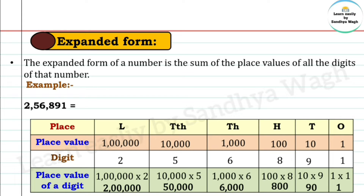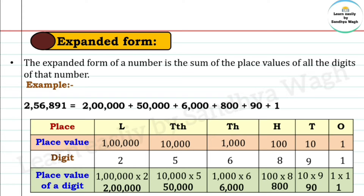So the expanded form of 2,56,891 is: 2,00,000 + 50,000 + 6,000 + 800 + 90 + 1.